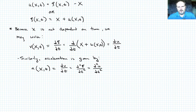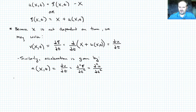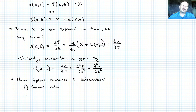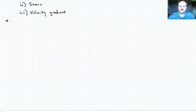Having defined position, current configuration, displacement, and velocity, we can now talk about three typical measures of deformation used in this problem. The first is the stretch ratio, which we've talked about before. The second is strain. And the third — which we didn't talk about in tensor form — is a commonly used quantity in plasticity: the velocity gradient. Let's first focus on the stretch ratio.